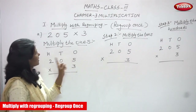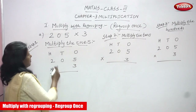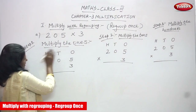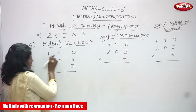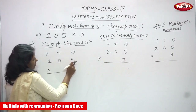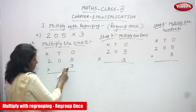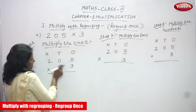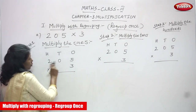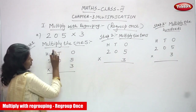Now we are going to see multiply with regrouping — regroup once. Let's start. First step: multiply the ones. We have hundreds, tens, and ones place values. Two hundred and five — that is 5 ones, 0 tens, and 2 hundreds — is going to multiply by a single digit number, three.